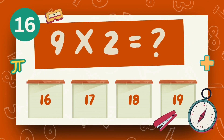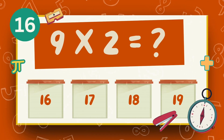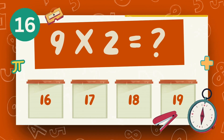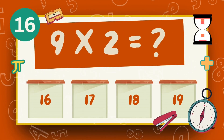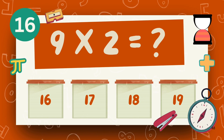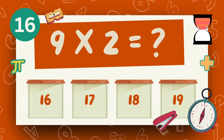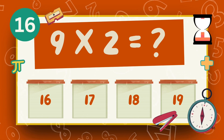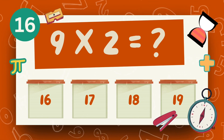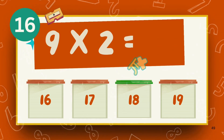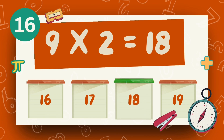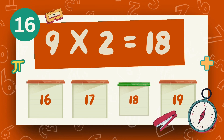What is 9 multiply 2? What is 6 multiply 2? The answer is 18.